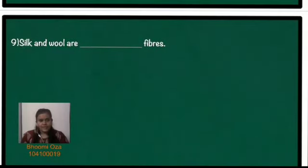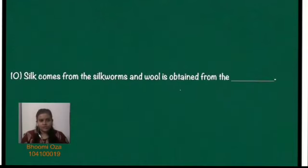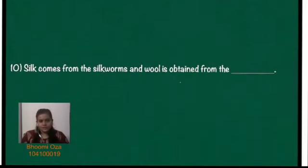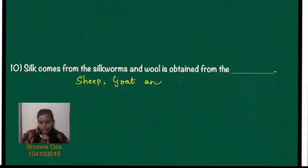Silk and wool are animal fibres. The last question: silk comes from silkworms, and wool is obtained from animals like sheep. It is also obtained from goat and can be obtained from yak.